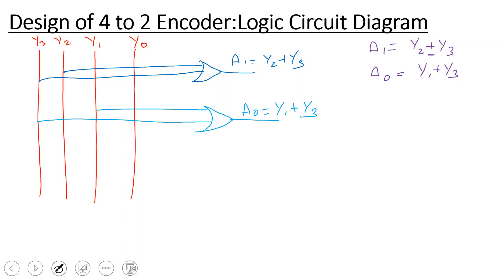I already said that you can design a combination circuit by first defining the problem statement, then constructing the truth table, then deriving the logical expression, simplifying it, and finally drawing the circuit diagram.